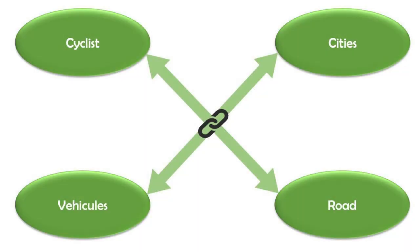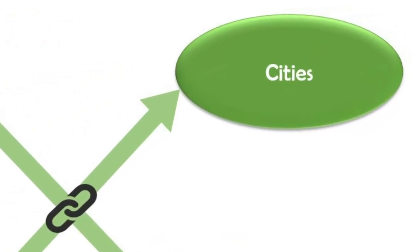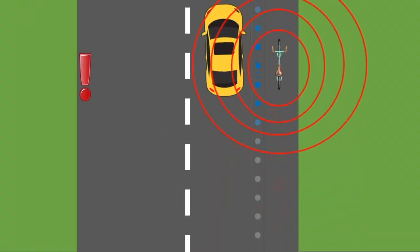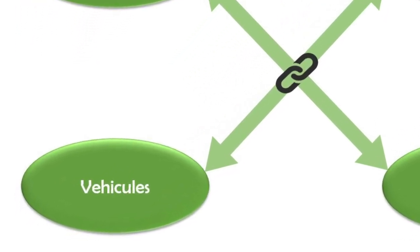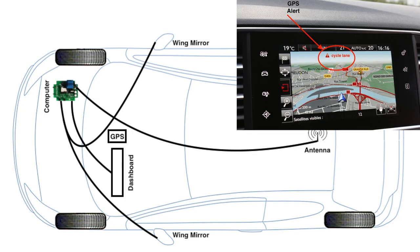To create a synergy between the different vehicles, the system is in constant interaction. Cars and bikes are equipped with an on-board system for the detection, the transmission of information and the prediction of potential dangers.